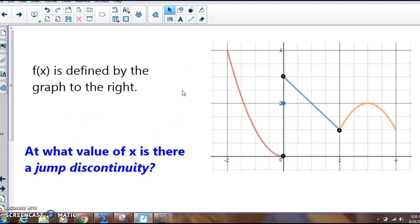Okay, now we're going to look at a graph of a function. The function is defined by this graph on the right side of your picture. I'm just asking you to look for two different questions. The first question I'm asking you to answer here is, at what value of x is there a jump discontinuity? So where is the graph creating a jump discontinuity?